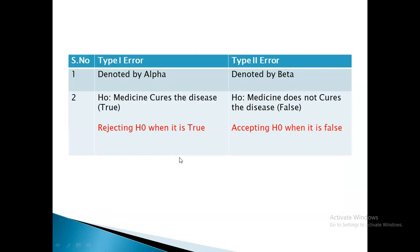The types of error — that is, Type 1 error and Type 2 error — are denoted by alpha for Type 1 error and beta for Type 2 error.